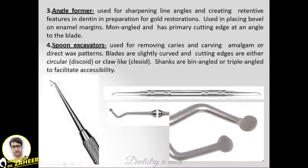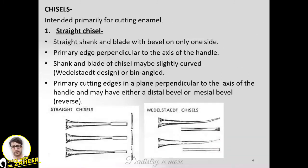The angle former is used for sharpening line angles and creating retentive features in preparation for gold restorations, and also for placing bevels on enamel margins. The spoon excavator is very commonly used to excavate caries, and can also be used for carving amalgam and wax patterns. Its blades are slightly curved with cutting edges that are either circular or claw-like, and shanks are bi-angled or triple-angled to facilitate accessibility.